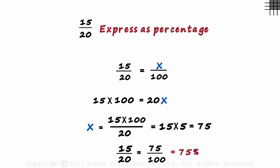It's because we want the denominator to be 100 and since these are equivalent ratios, we multiply 15 by 20 by 100.